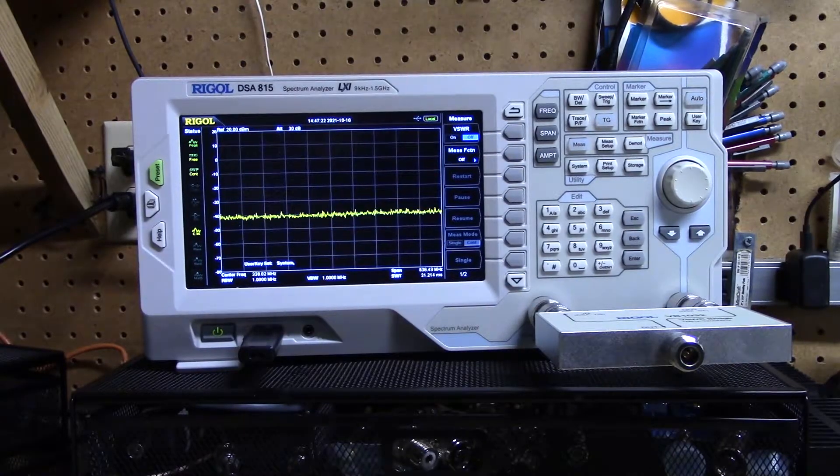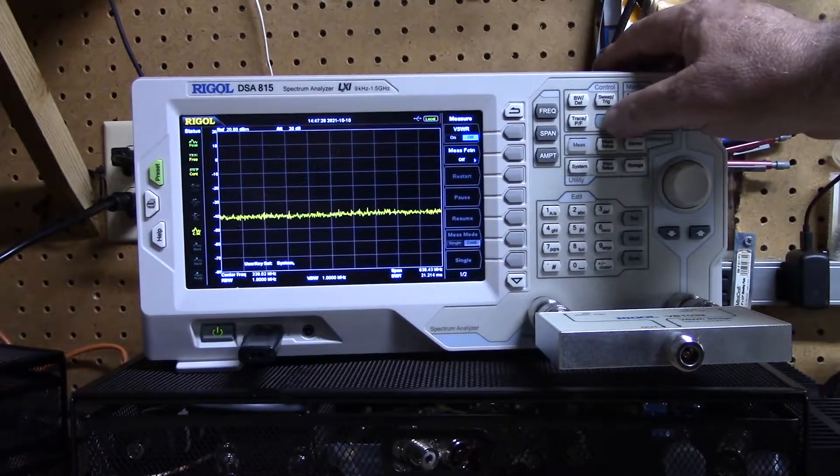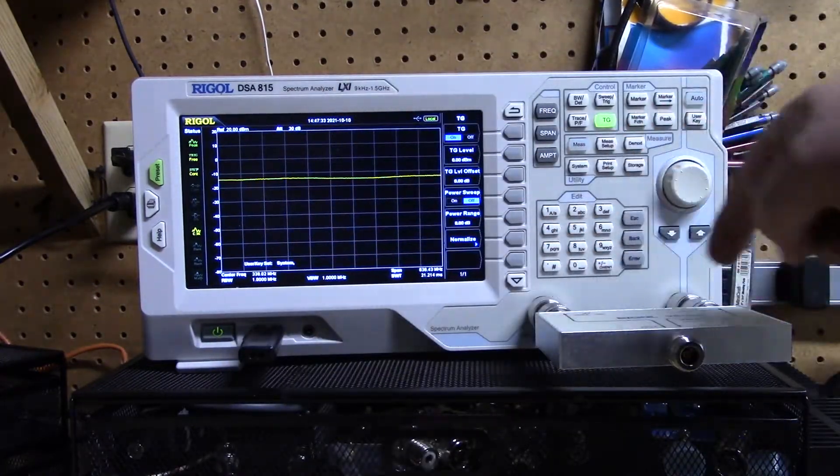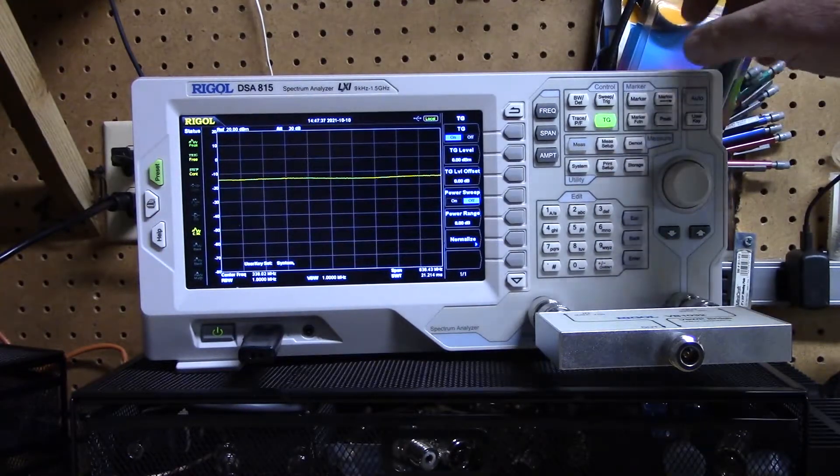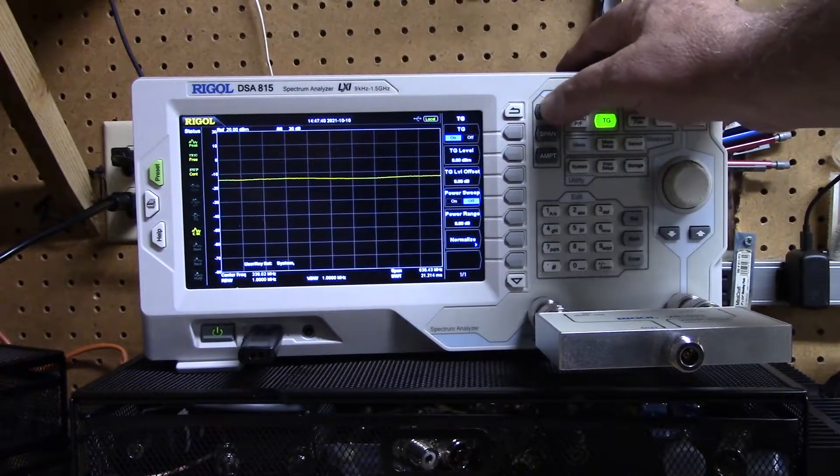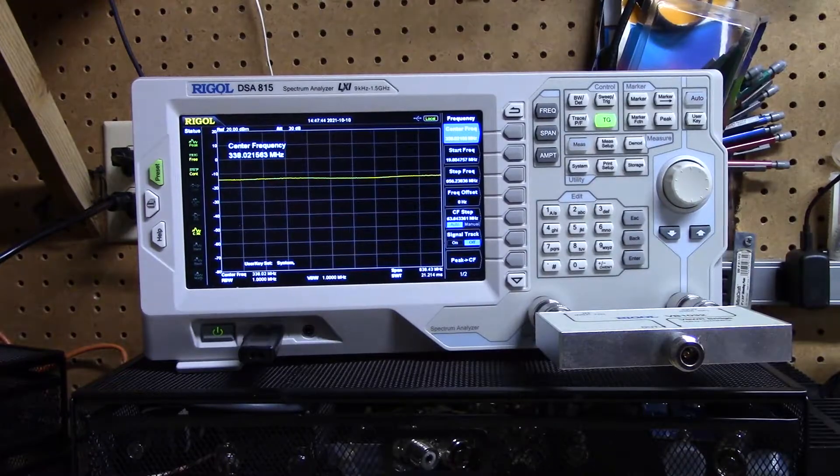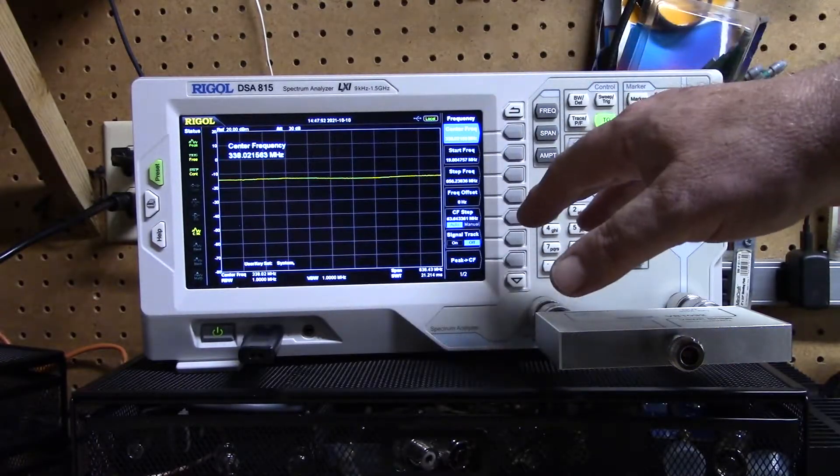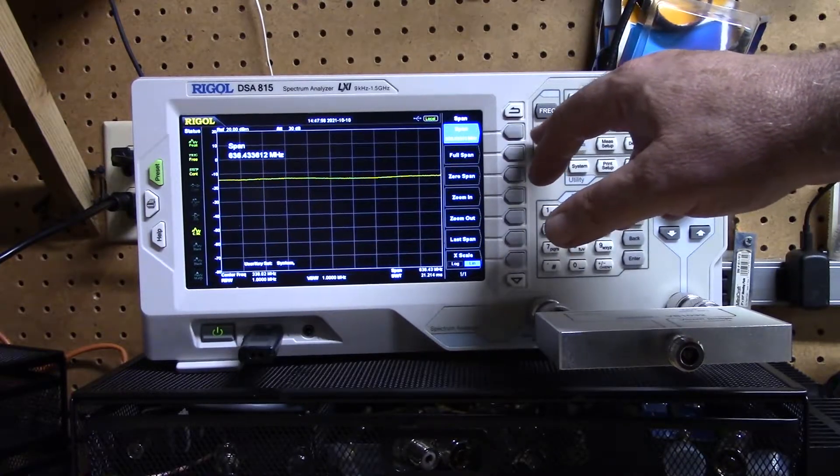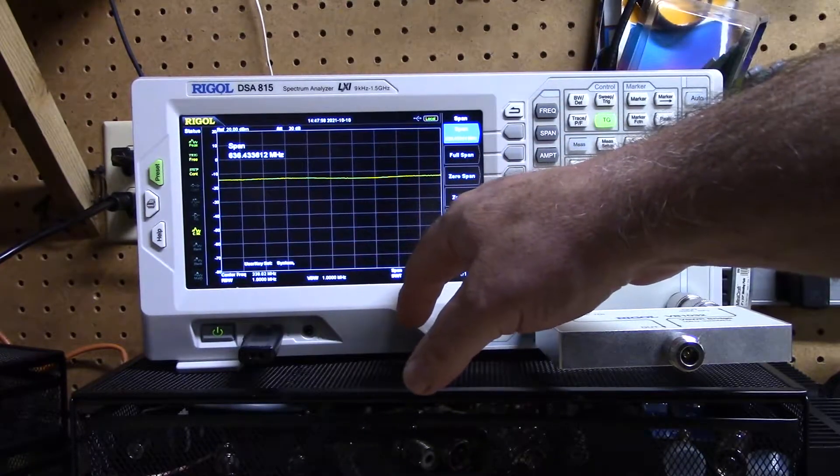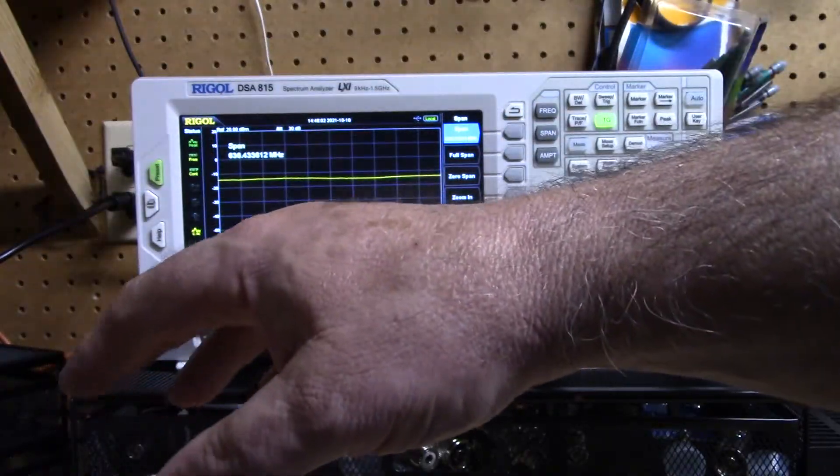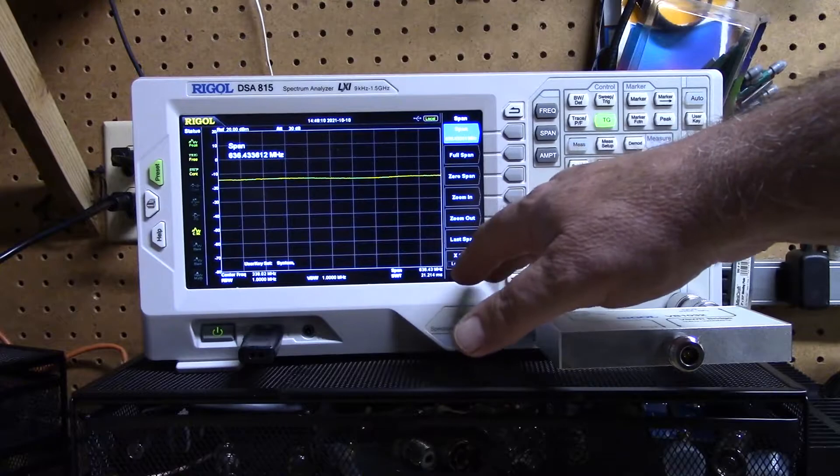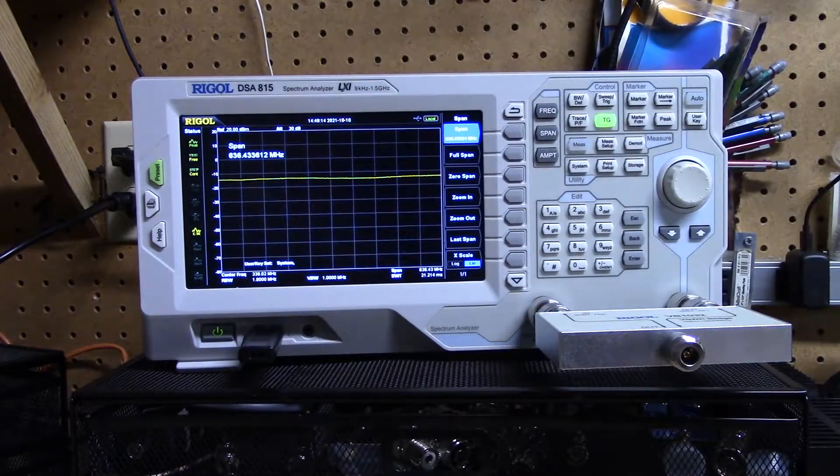First we want to turn on the tracking generator. As you can see, there's no signal, we're going straight back in. Next thing I want to do is set my frequencies. I've already set these to look at 2 meter and 440. Our span is set - we have about a 636 megahertz span to cover slightly below 2 meters and slightly above 70 centimeters. We're on a linear scale, we may play with that and change to logarithmic, but right now I've got it on linear.